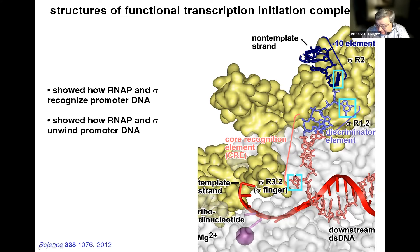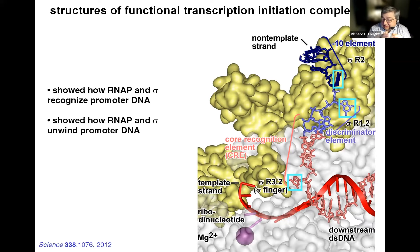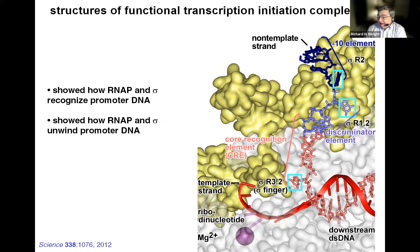Likewise, the last nucleotide of the transcription bubble non-template strand is unstacked, flipped, rotated by 180 degrees, and inserted into a protein pocket formed by RNA polymerase core enzyme, specifically the beta subunit, where interactions are made with essentially all atoms of the base. These interactions with unstacked, rotated nucleotides inserted into pockets allow for very high-fidelity sequence readout, and crucially, are interactions that only can occur with single-stranded DNA. Because these interactions only can occur with single-stranded DNA, they enable RNA polymerase and sigma to use binding-free energy to drive the unwinding of DNA from double-stranded to single-stranded to form the transcription bubble, without any additional input of chemical energy—no need for a helicase, no need for ATP hydrolysis.